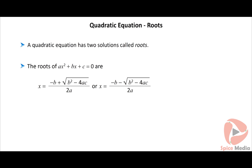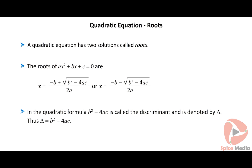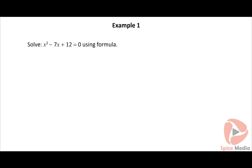A quadratic equation has two solutions called roots. The roots of ax² + bx + c = 0 are x = (−b + √(b² − 4ac)) / 2a or x = (−b − √(b² − 4ac)) / 2a. In the quadratic formula, b² − 4ac is called the discriminant and is denoted by delta. Thus, Δ = b² − 4ac.